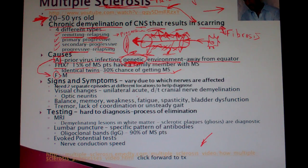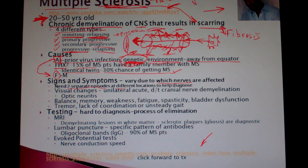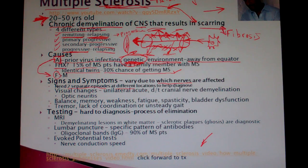Signs and symptoms are somewhat difficult to pin down exactly because it really depends on which nerves are being affected. One of the diagnostic criteria is that you need two separate episodes at different locations to help diagnose multiple sclerosis. You can't really diagnose it from a single episode — there needs to be more than one distinct occurrence.